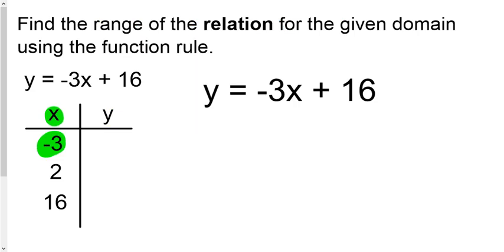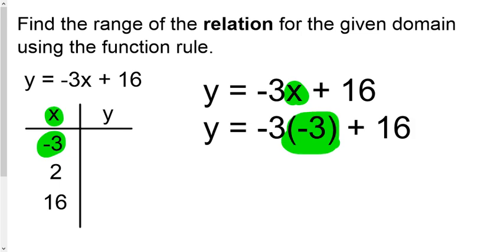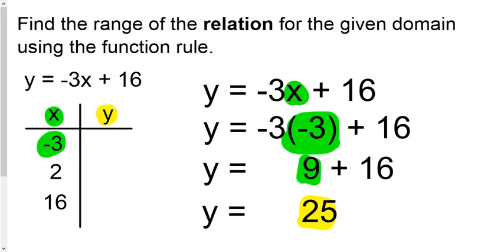So take your equation and plug your x's in. So that x right there is multiplying negative 3, and our first x is negative 3, so when it plugs in, it's negative 3 times negative 3. That would equal 9, and 9 plus 16 is 25. So plug your 25 into the table.